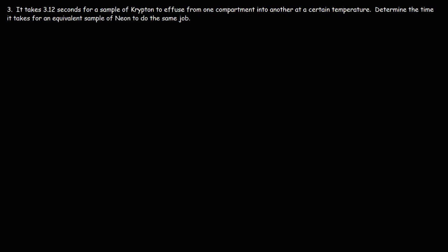Now let's move on to our last problem. It takes 3.12 seconds for a sample of krypton to effuse from one compartment into another at a certain temperature. Determine the time it takes for an equivalent sample of neon to do the same. This problem deals with time rather than rate. Time and rate are inversely related — as molar mass increases, rate of effusion decreases, which means the time to effuse is longer. Heavy gases move slower and take longer to reach their destination.